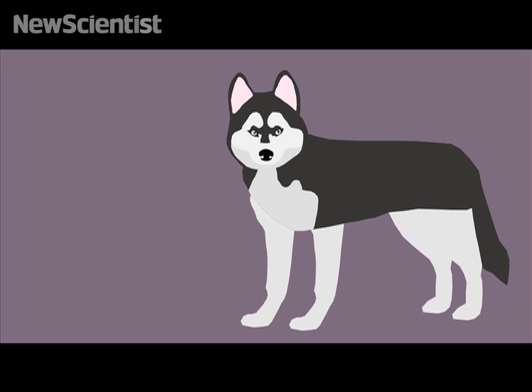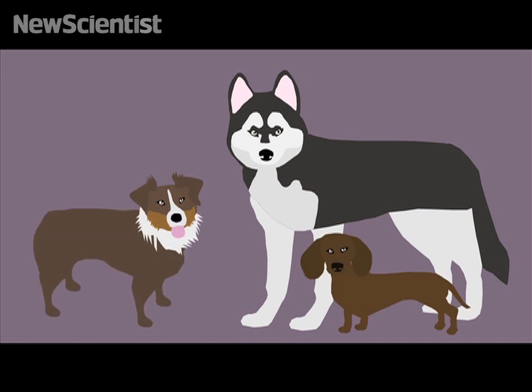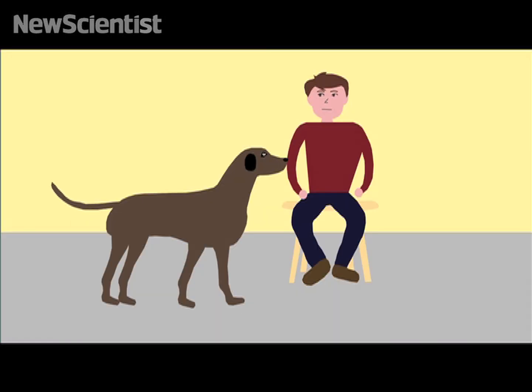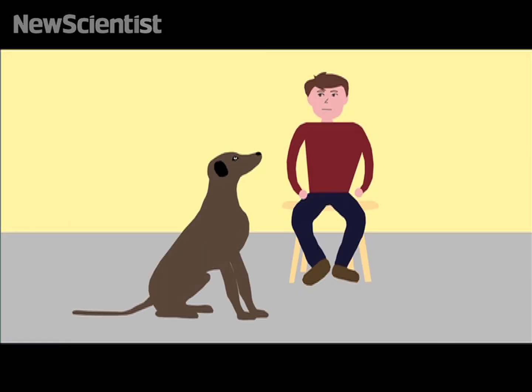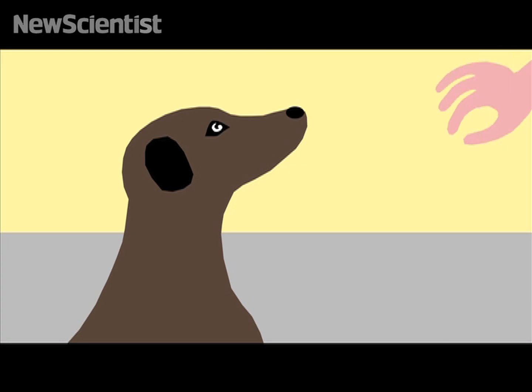Now, Miho Nagasawa and colleagues suggest that such eye contact does the same thing to a dog's brain and that this phenomenon probably co-evolved in both species as dogs became domesticated. First, they put dogs and their owners into the same room for 30 minutes and recorded everything that happened.